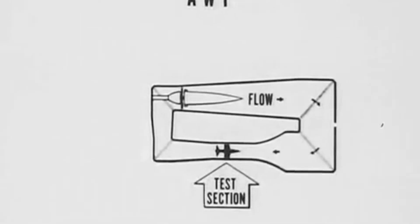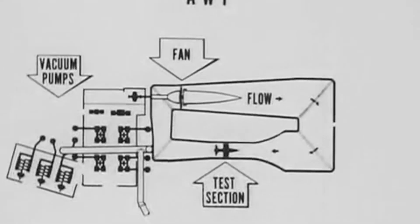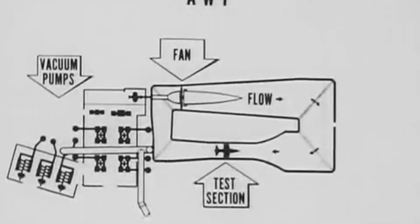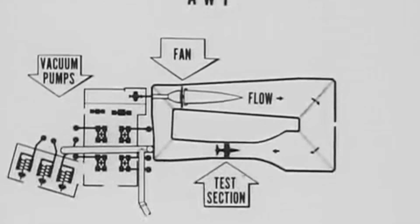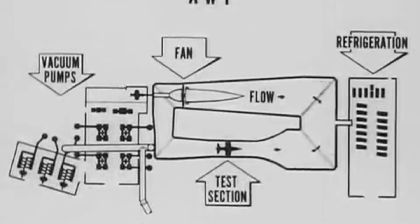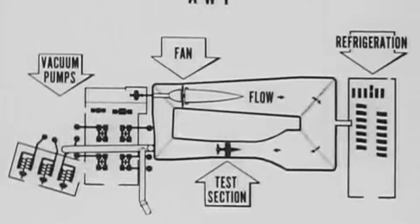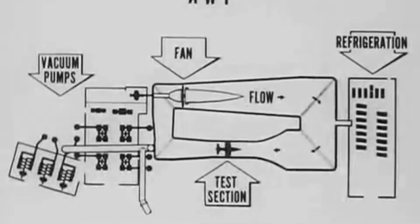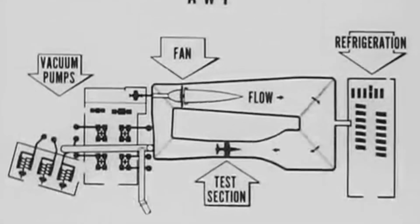The AWT was initially built to simulate the altitude condition normally encountered by aircraft at 50,000 feet. A giant fan here circulates air up to speed of 400 miles per hour while simultaneously the vacuum pumps raise the tunnel altitude from ground level to 50,000 feet. Also, since high altitude air is much colder,